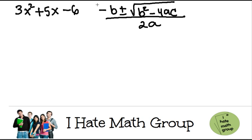When you have the quadratic formula, which is negative b plus and minus the square root of b squared minus 4ac, all divided by 2a, the discriminant is going to be this little piece right here.